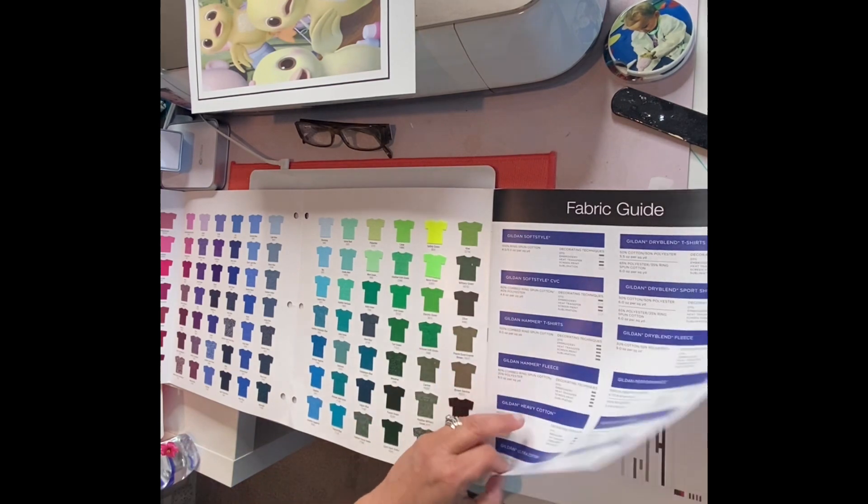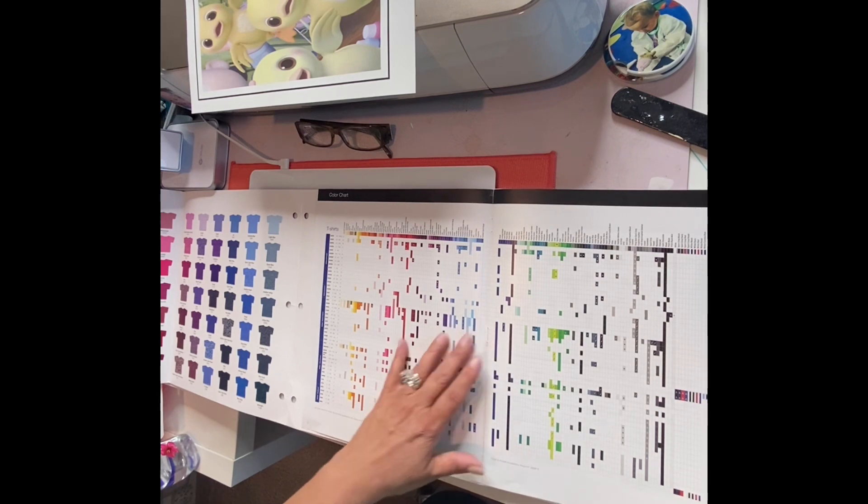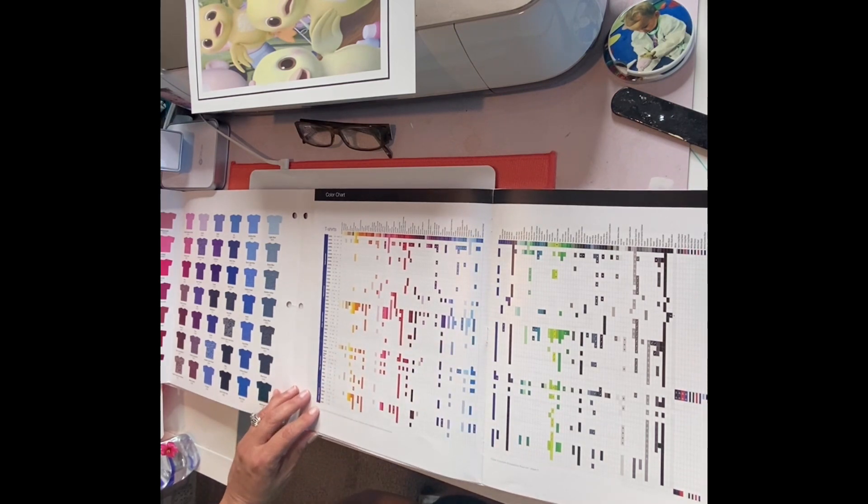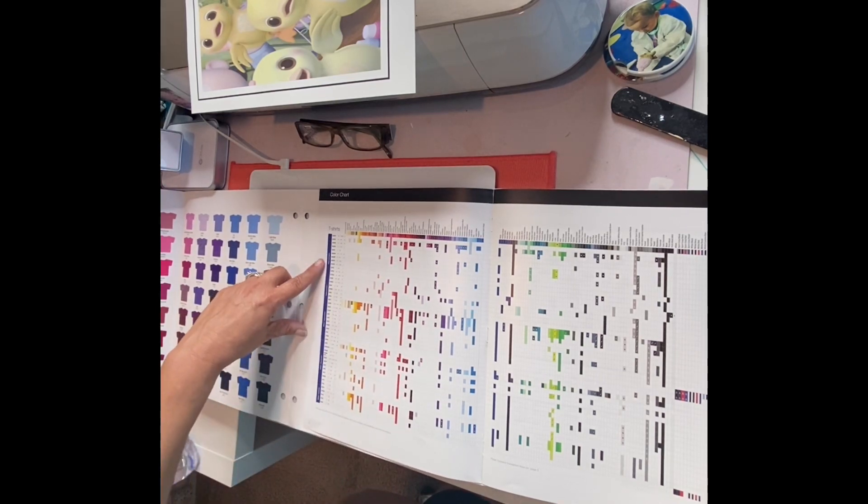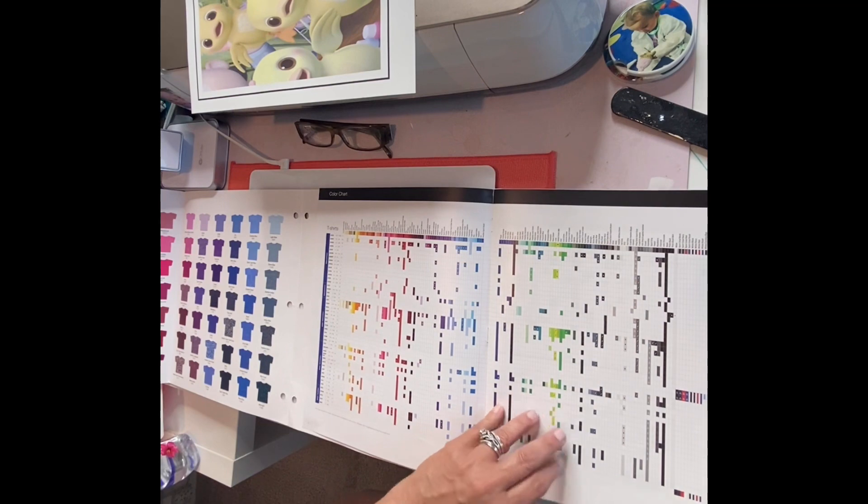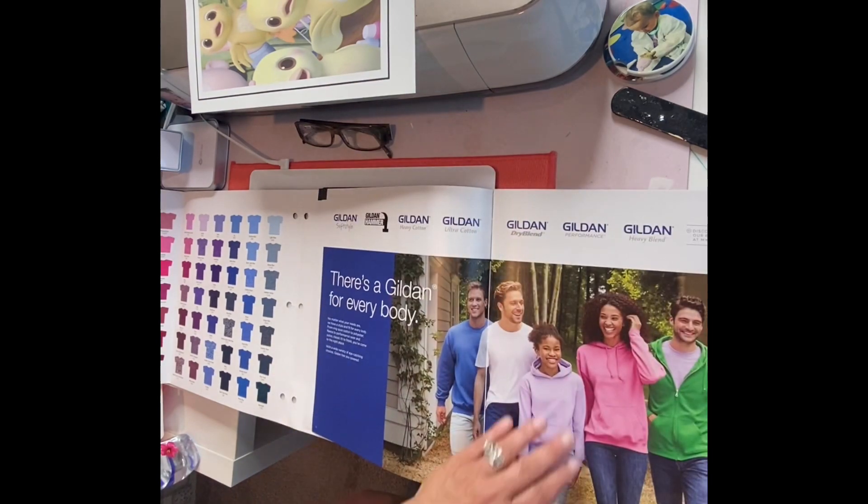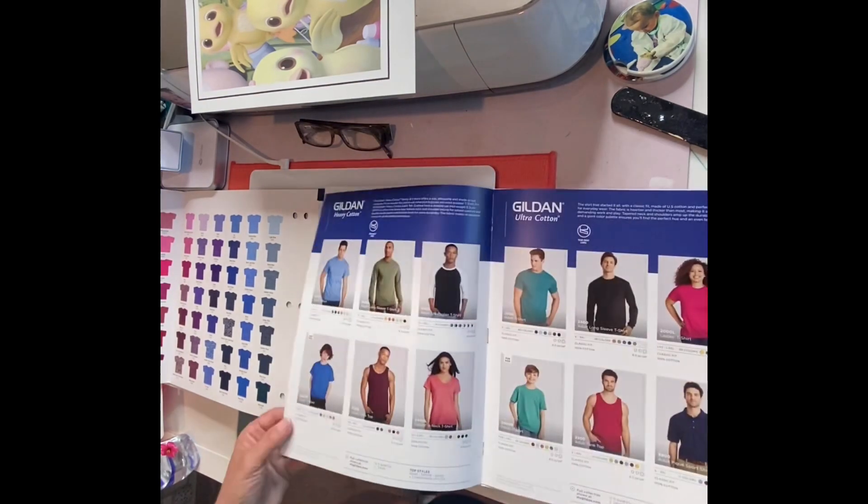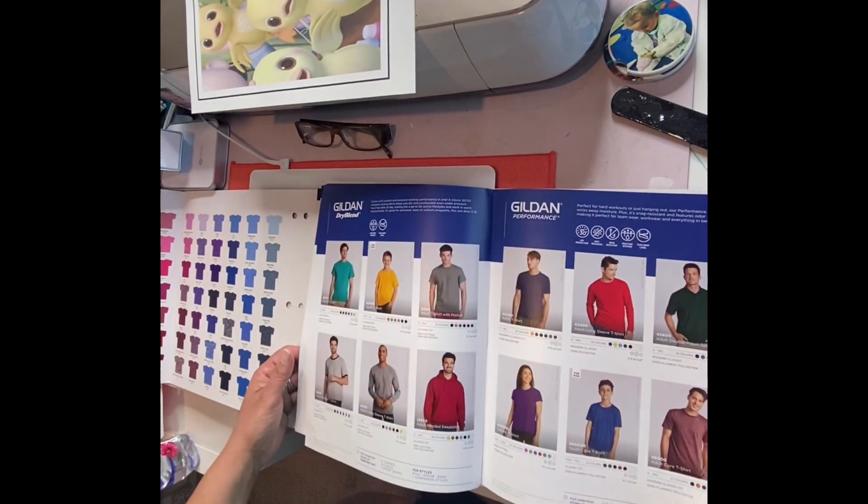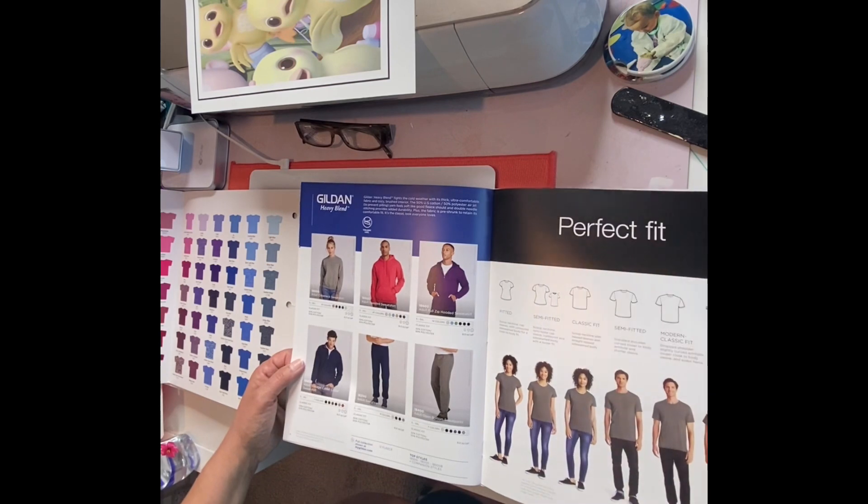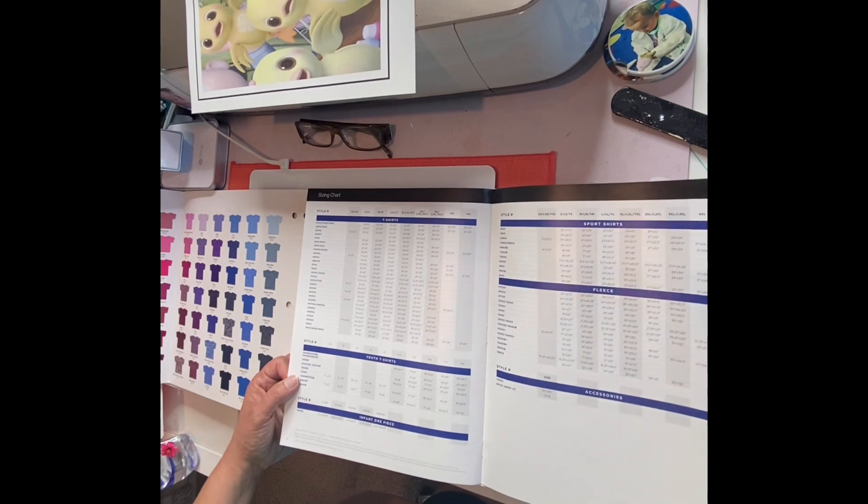On your color chart, it actually tells you which colors you can get in which different blend, so that's very cool. It continues with that, and then it shows you all the different products, what the fits look like, which is also very cool, and sizing.